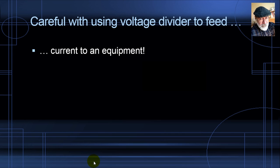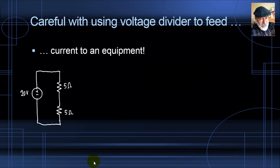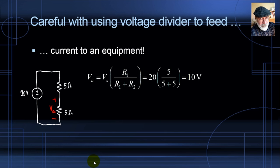Here we have a voltage divider: 20 volts divided between two resistors of 5 ohms each. Because each is 50% of the total resistance, the midpoint voltage VA is 10 volts, given by the voltage divider formula. We're tempted to connect a device that operates at 10 volts, hoping the voltage will remain 10 volts and the device will operate satisfactorily.